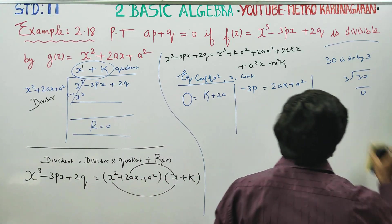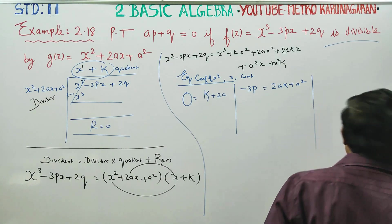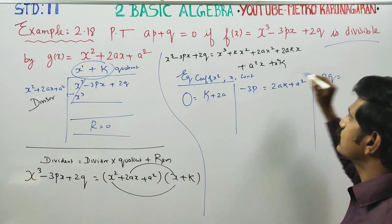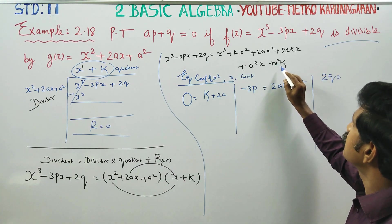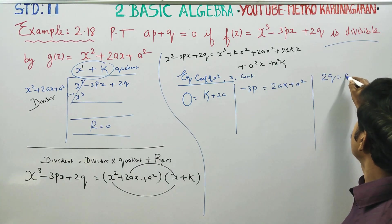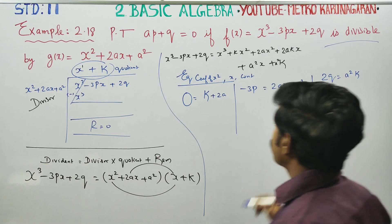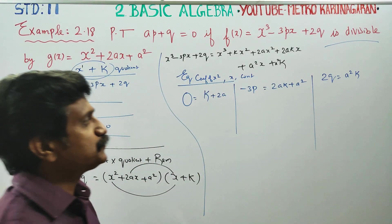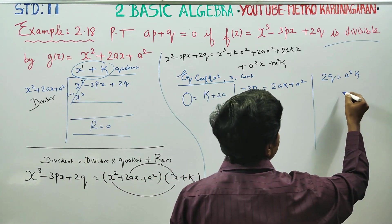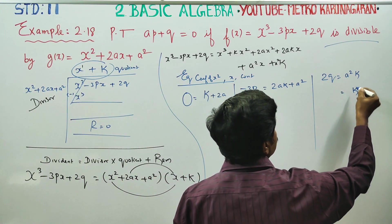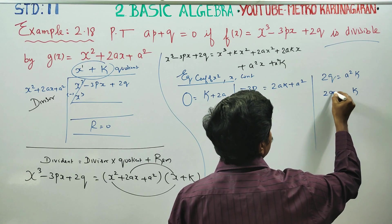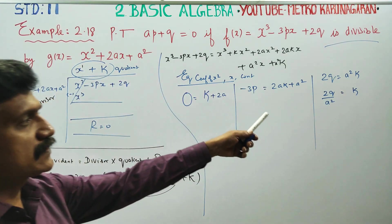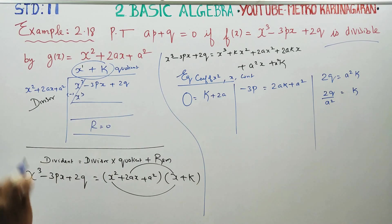Now equating the constant terms: 2Q equals A squared K. Since K is unknown, K is equal to 2Q divided by A squared.